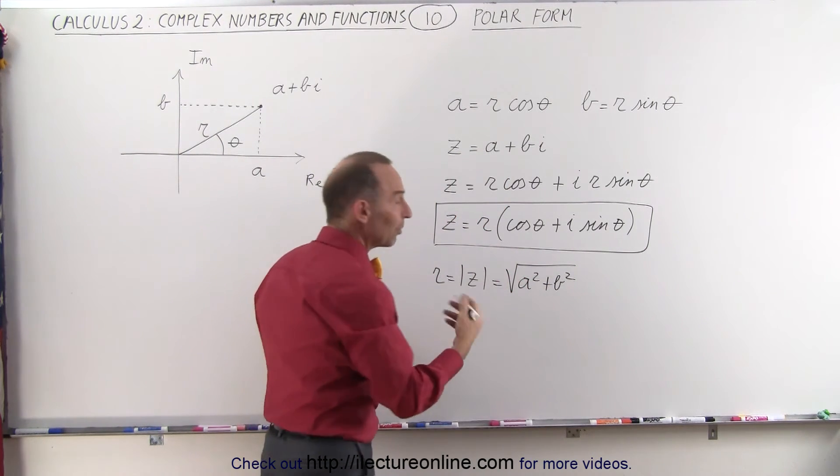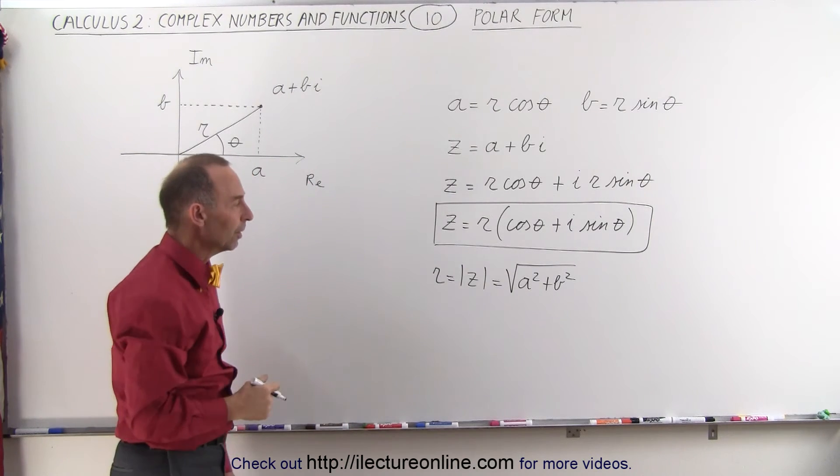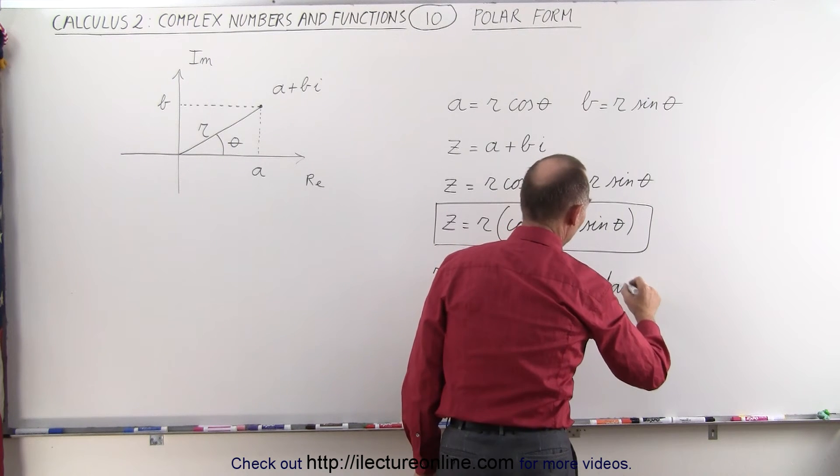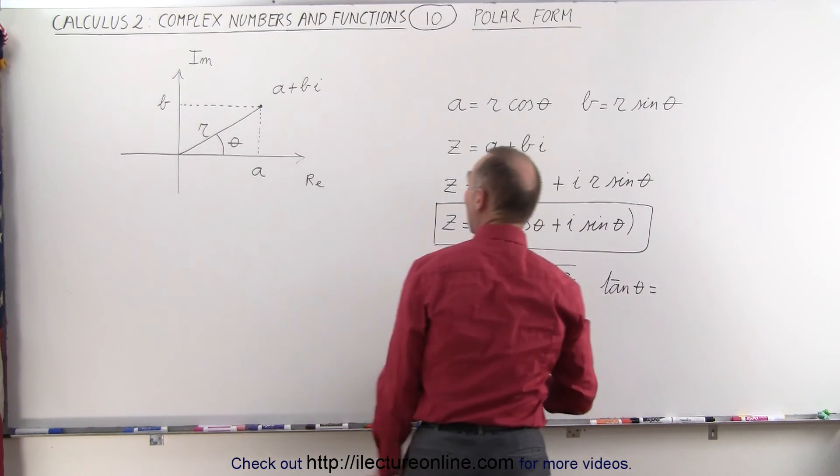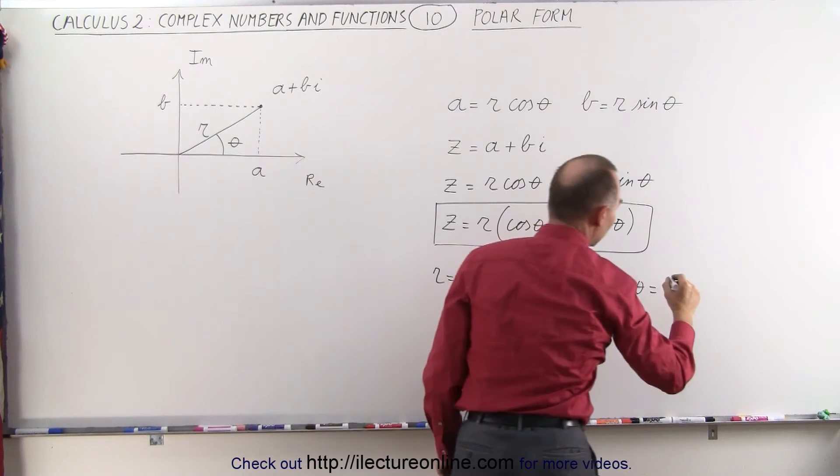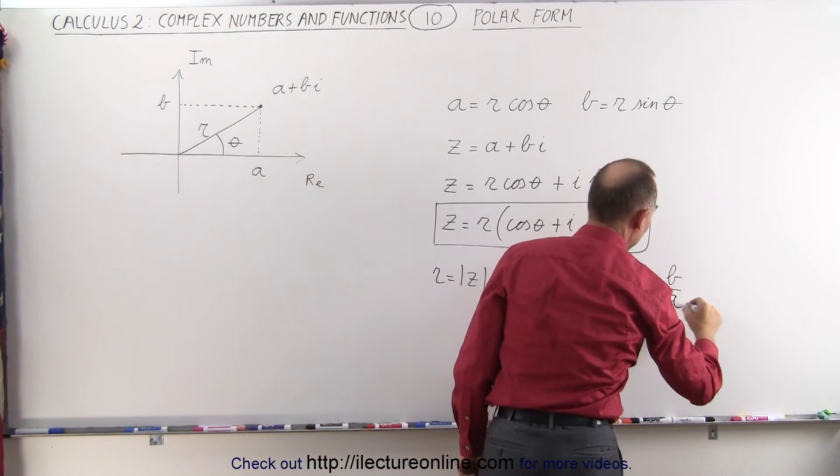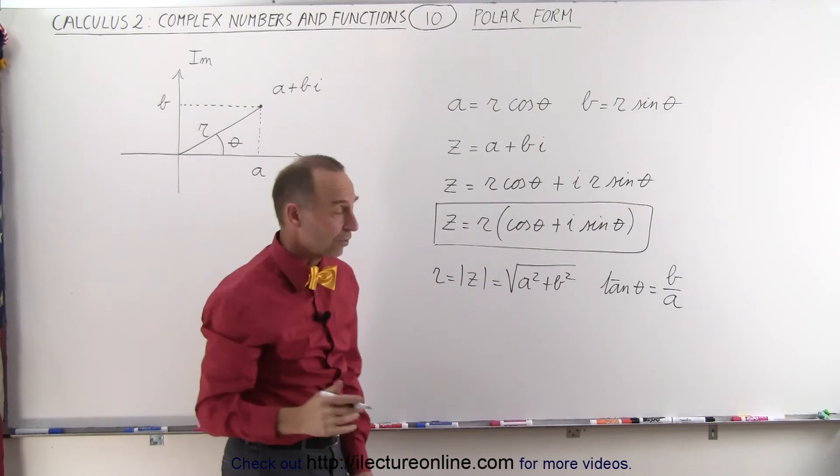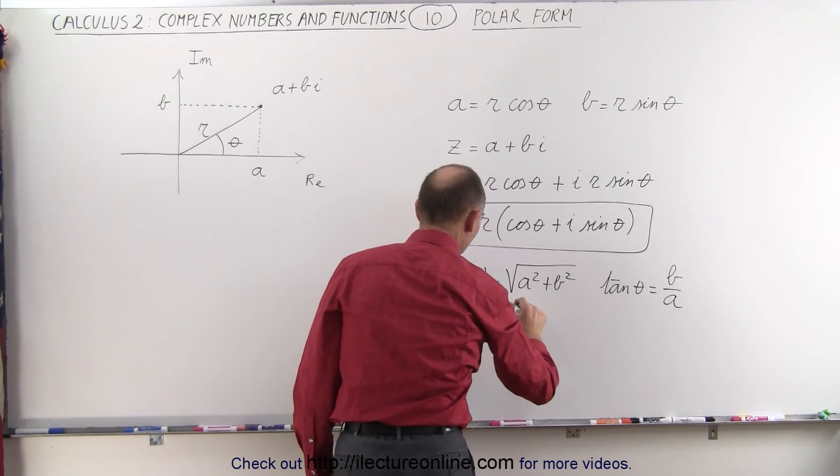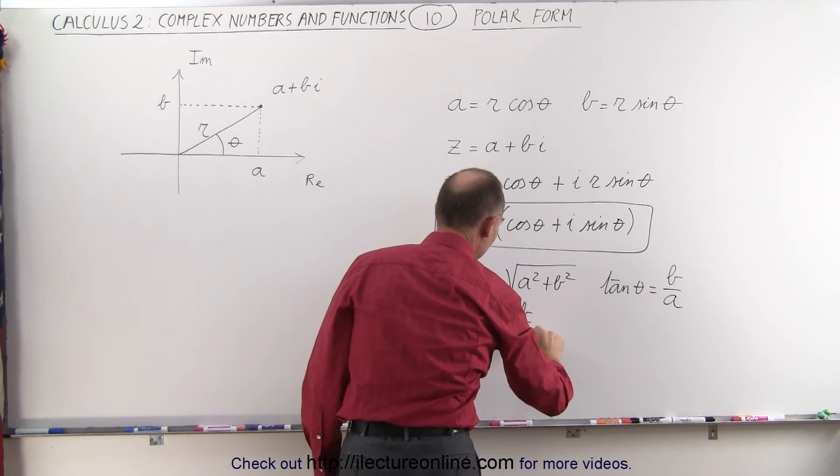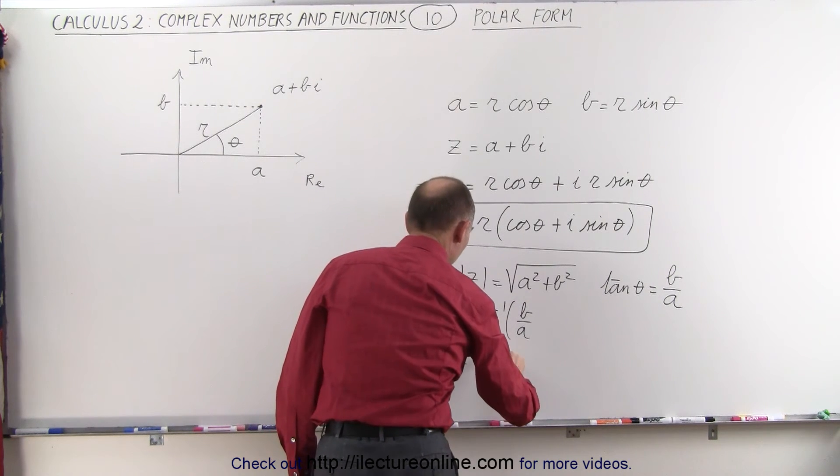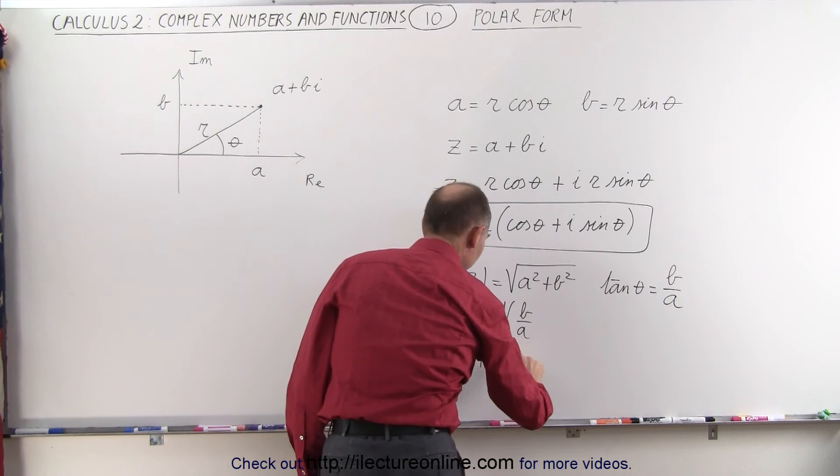So it's basically using Pythagorean theorem to get the value of R. And we can represent the angle theta by saying that tangent of theta is equal to the opposite over the adjacent. The opposite is B, the adjacent is A, so this can be written as B over A. Or we can solve that for theta and say that theta is equal to the inverse tangent of B over A.